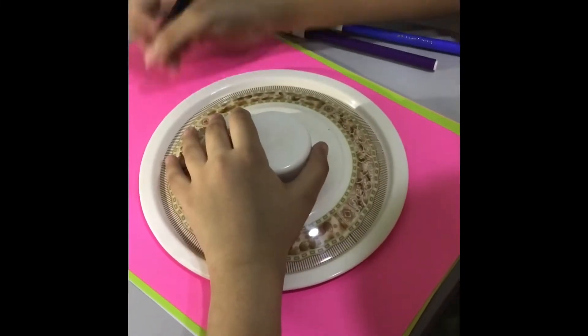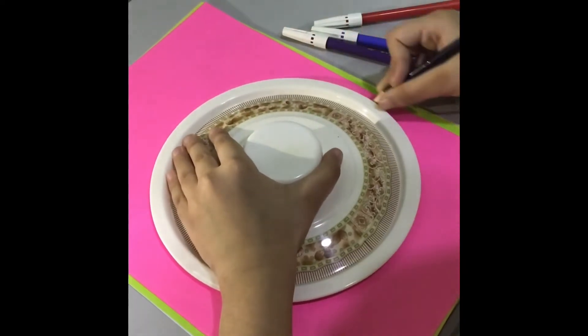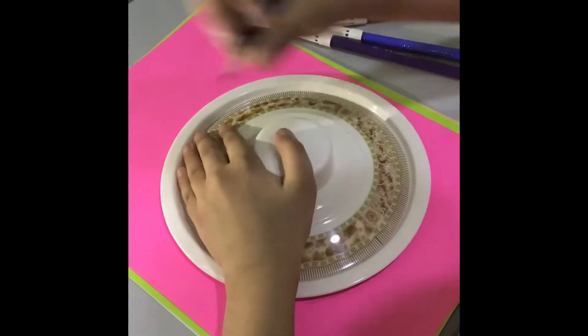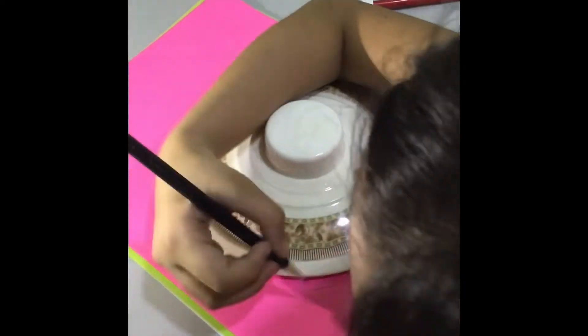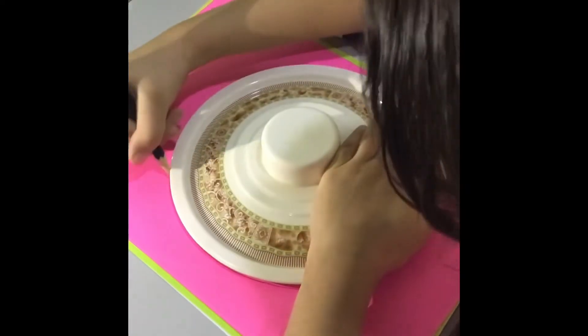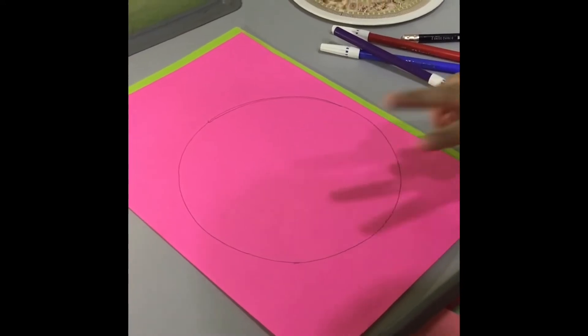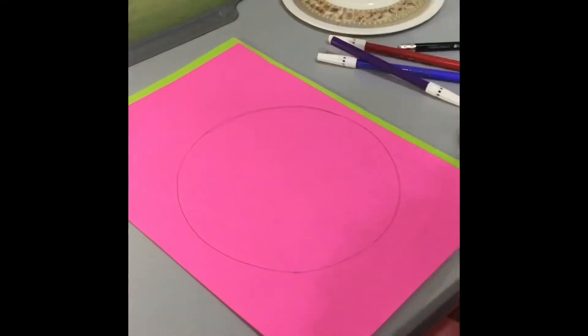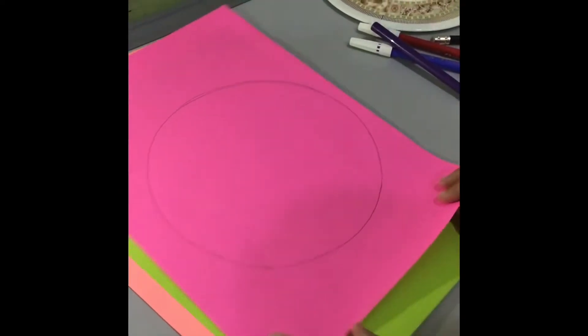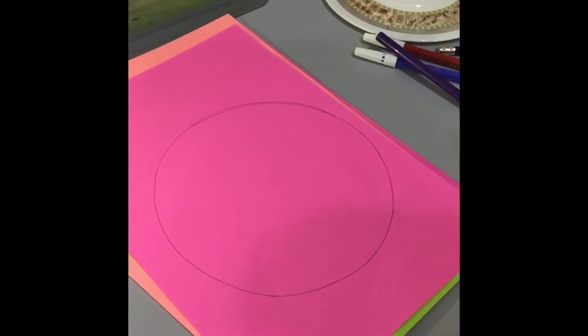So first of all, I am going to make a circle. I am going to make 11 same circles and cut them. I am using color paper and you can even use plain white paper, no problem. So guys, my circles are ready so let's move on to the next step.